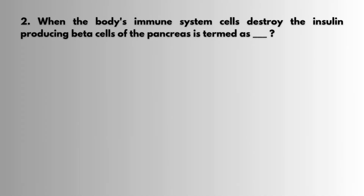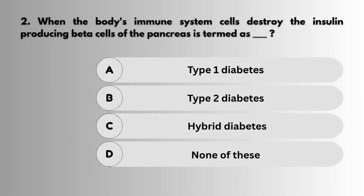Question 2: When the body's immune system cells destroy the insulin-producing beta cells of the pancreas, it is termed as dash.